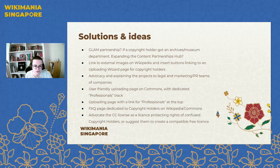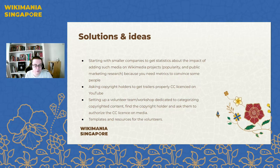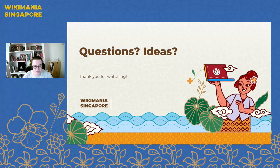Other ideas include linking to external images on Wikipedia articles since it's the main gateway to this content, and inserting buttons linking to an uploading page specifically for copyright holders. More advocacy and explaining the projects to legal, marketing, and PR teams of companies and non-profit organizations. Also, a more user-friendly uploading page on Commons, a project page with links for professionals, a top FAQ page advocating the CC license, starting with smaller companies, and maybe a volunteer team or workshop for this, along with templates and resources.